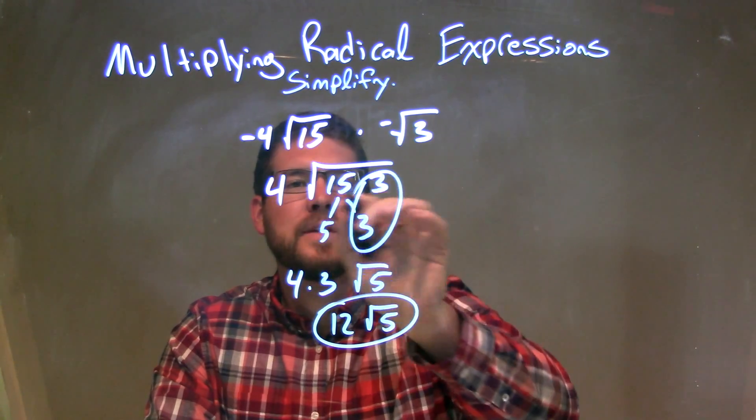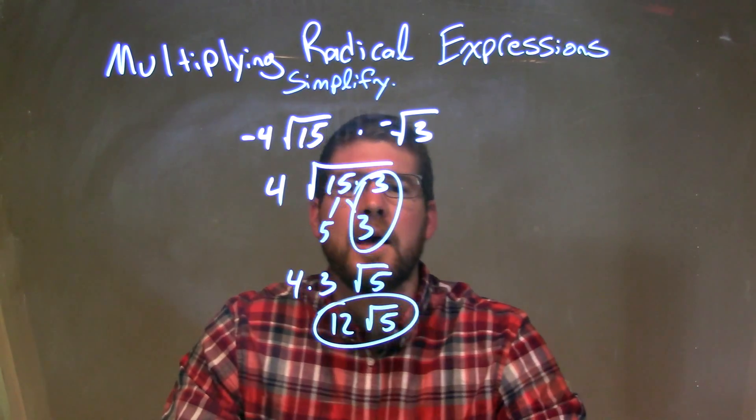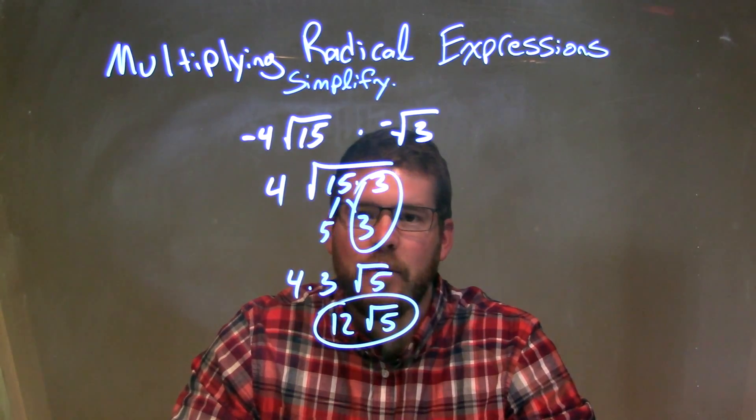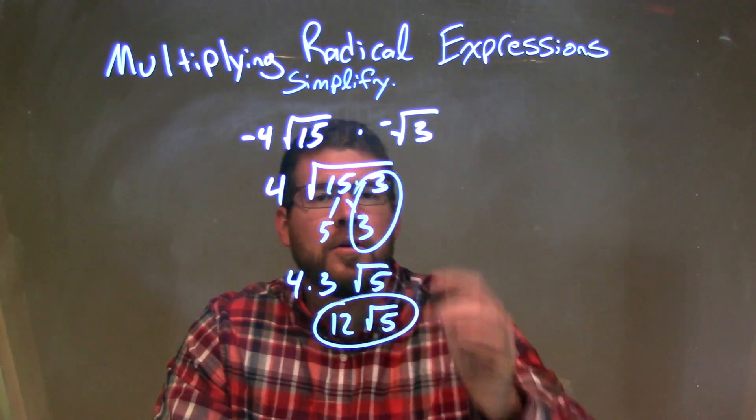Under the square root, we bring together the 15 times the 3. 15 times the 3 right there. Then we break down the 15. 15 breaks down to be 5 times 3. And then we circle our pairs.